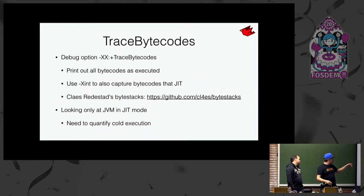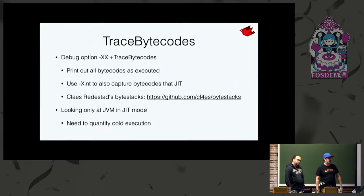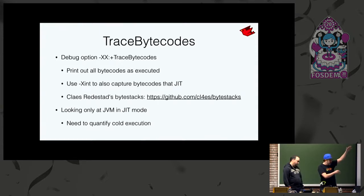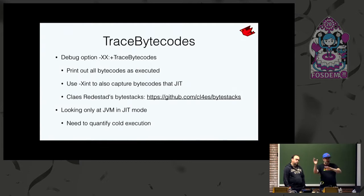If you force it not to JIT, you see everything that would run; once things JIT, they no longer show up in the trace. I'm using Clauses-by-Stacks tool, which takes that trace bytecode output and turns it into a flame graph of your application, showing where most cold bytecode is executing.